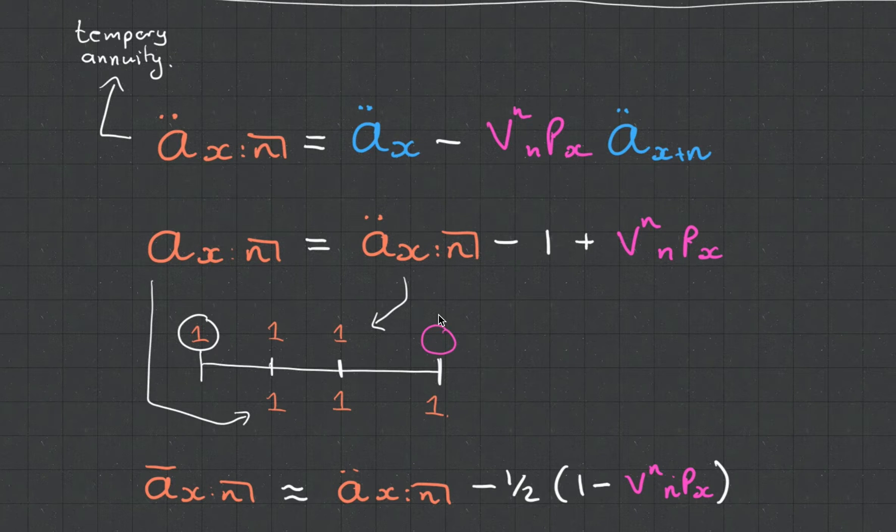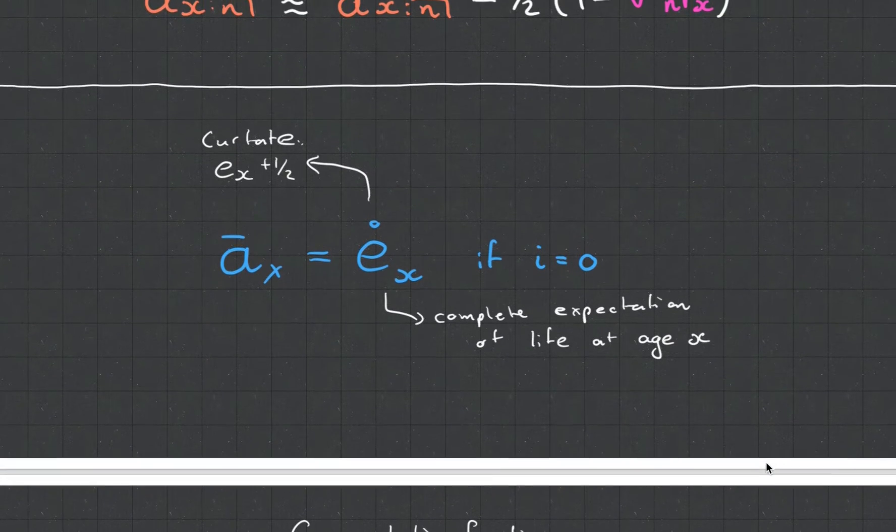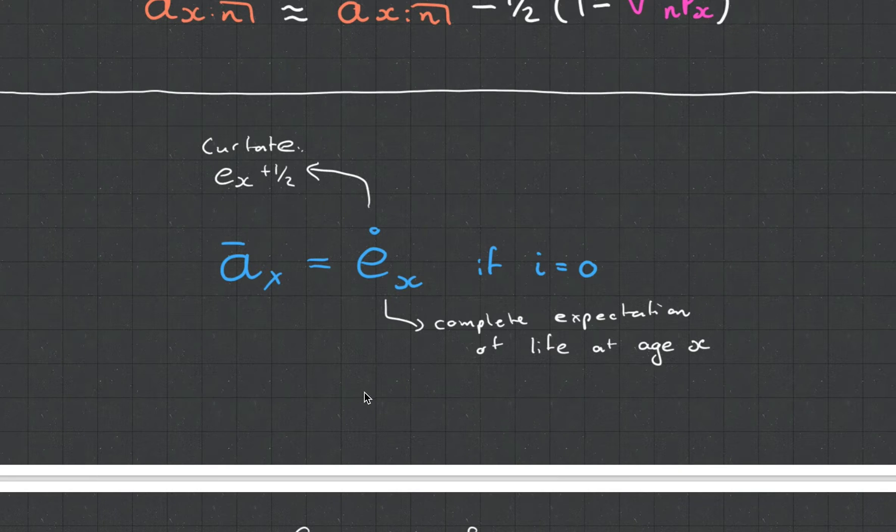When it's continuous, you can see that we just have to make it halfway in order to account for that. Another interesting thing that you might see is that if the interest rate is zero, your immediate annuity actually then becomes your complete life or complete life expectation.